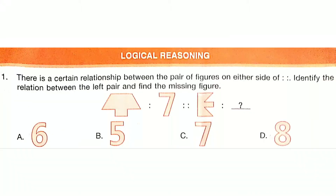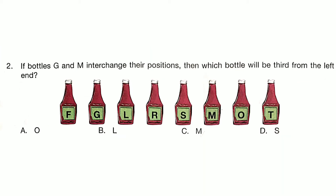Logical Reasoning. There is a certain relationship between the pair of figures on either side. Identify the relation between the left pair and find the missing figure. Answer is Option C.